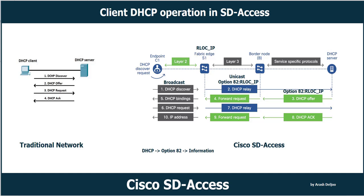This is the key function of Option 82: because the anycast gateway address is not unique within the fabric — it is shared by all fabric edge nodes — Option 82 is what allows the border to route the reply to the correct edge. Step 4: the DHCP Offer is received by the fabric edge node S1. Step 5: S1 updates its DHCP binding database and forwards the DHCP Offer to C1, recording the client MAC address on the port along with the offered IP address.